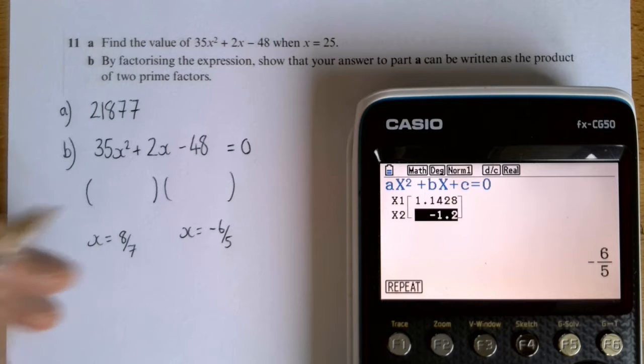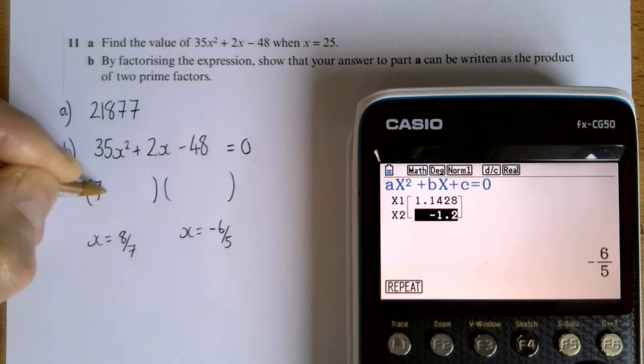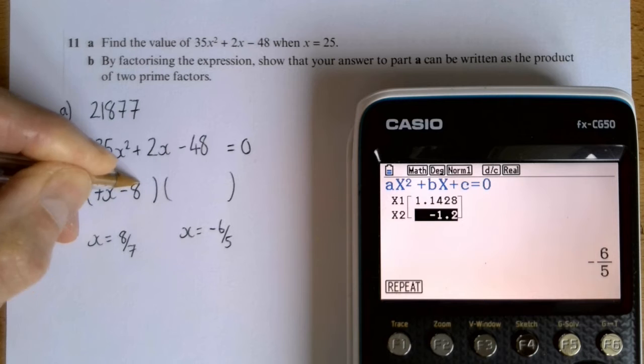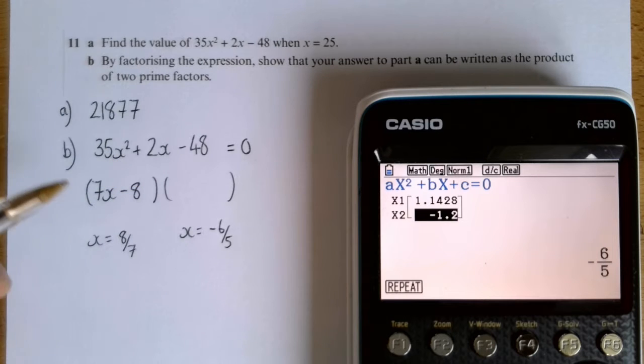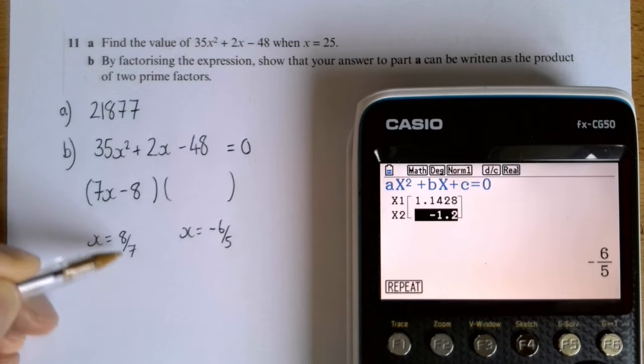And the trick was there that that told me that this bracket was 7x minus 8, and that's because for this bracket to be 0, 7x would have to be 8, so x is 8 divided by 7.